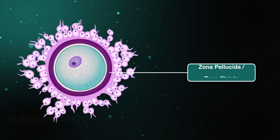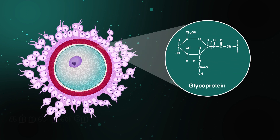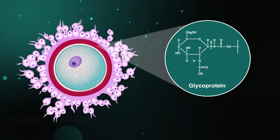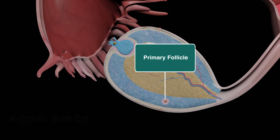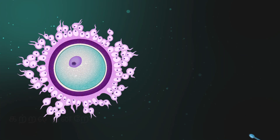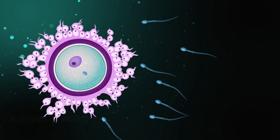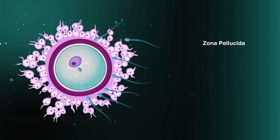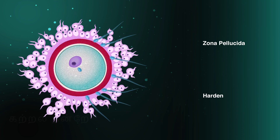The vitelline membrane is surrounded by a thick, transparent membrane called the zona pellucida or zona striata. This membrane, composed of glycoproteins, is a protective layer for the ovum. It is not present in the primary follicle but develops in the secondary follicle. Once a viable sperm cell reaches the nucleus of the ovum, the zona pellucida hardens, preventing other sperm cells from penetrating it.